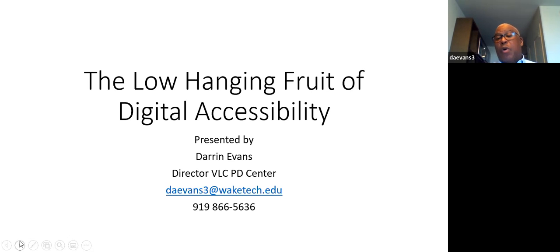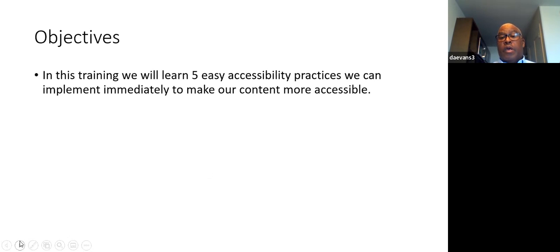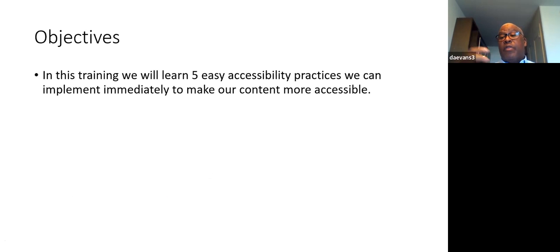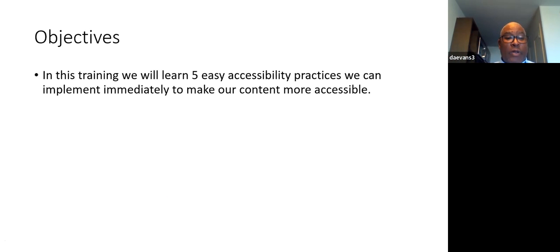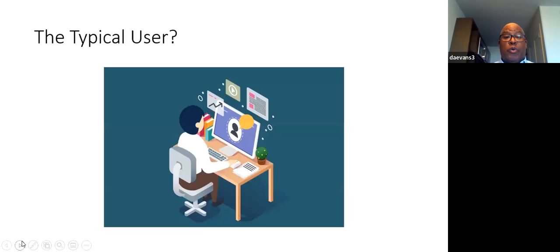Today we're going to talk about the low-hanging fruit of digital accessibility. I'm going to give you five easy things that you can do — things you can leave today and implement that'll make your content more accessible. Plus you're going to get a couple of bonus things. The point of this is to give you some easy accessibility techniques you can use.